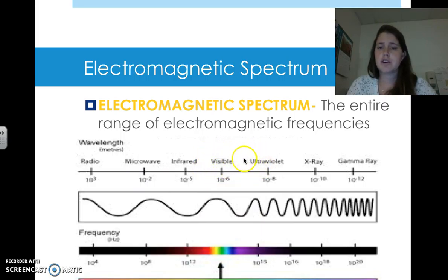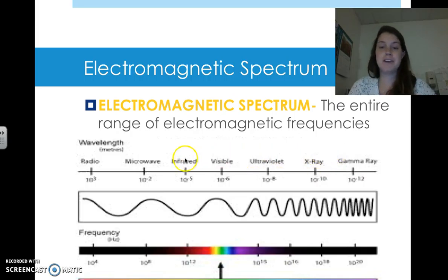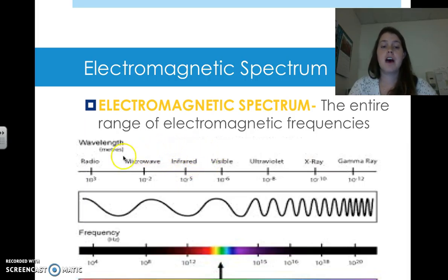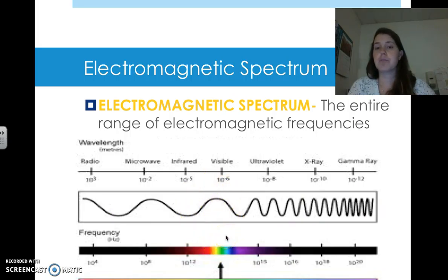You've probably heard of ultraviolet rays when it comes to sunscreen, X-rays when you break your hand, gamma rays from comic books or movies, infrared, microwave, and radio waves. These are all the waves in the spectrum, ordered by frequency — radio having the lowest frequency and gamma rays having the highest. In the middle is the visible light that we can actually see: all the different colors of the rainbow.